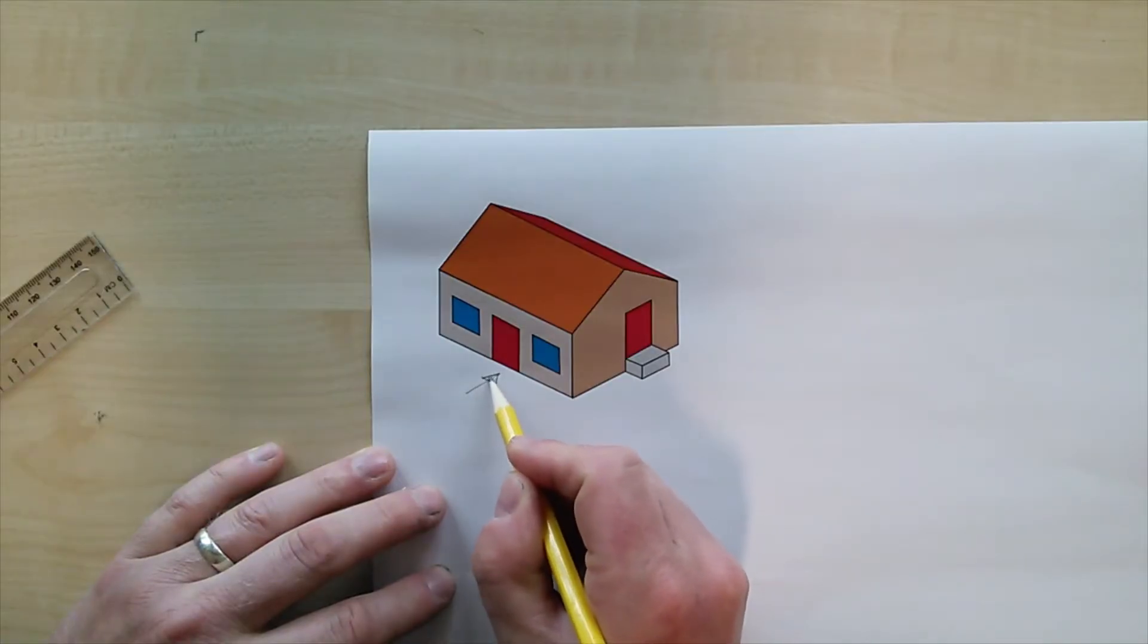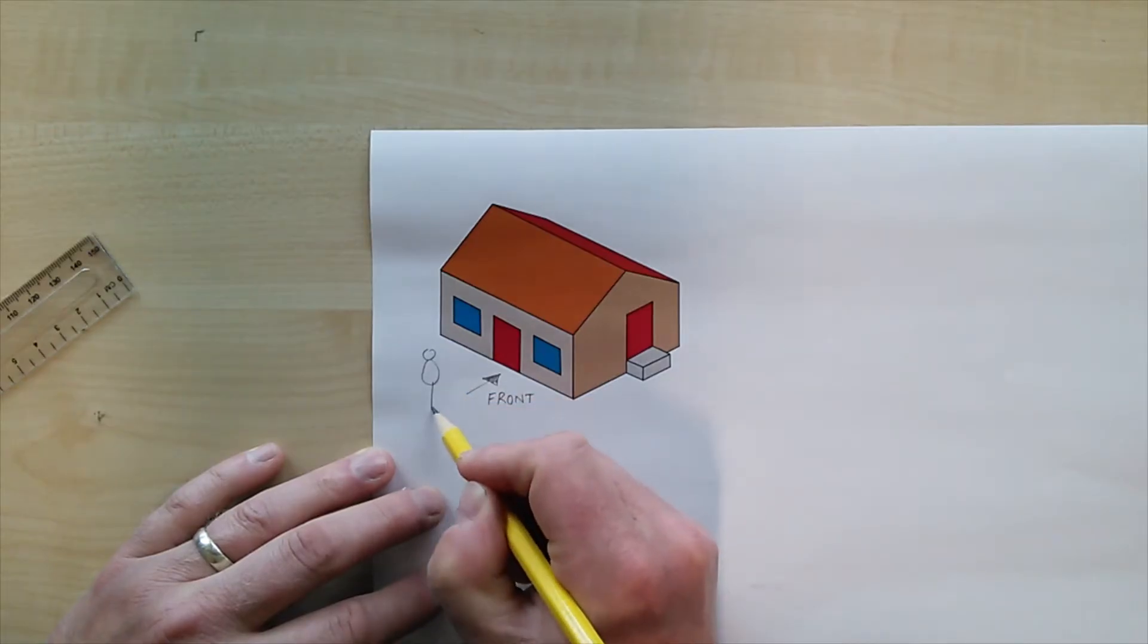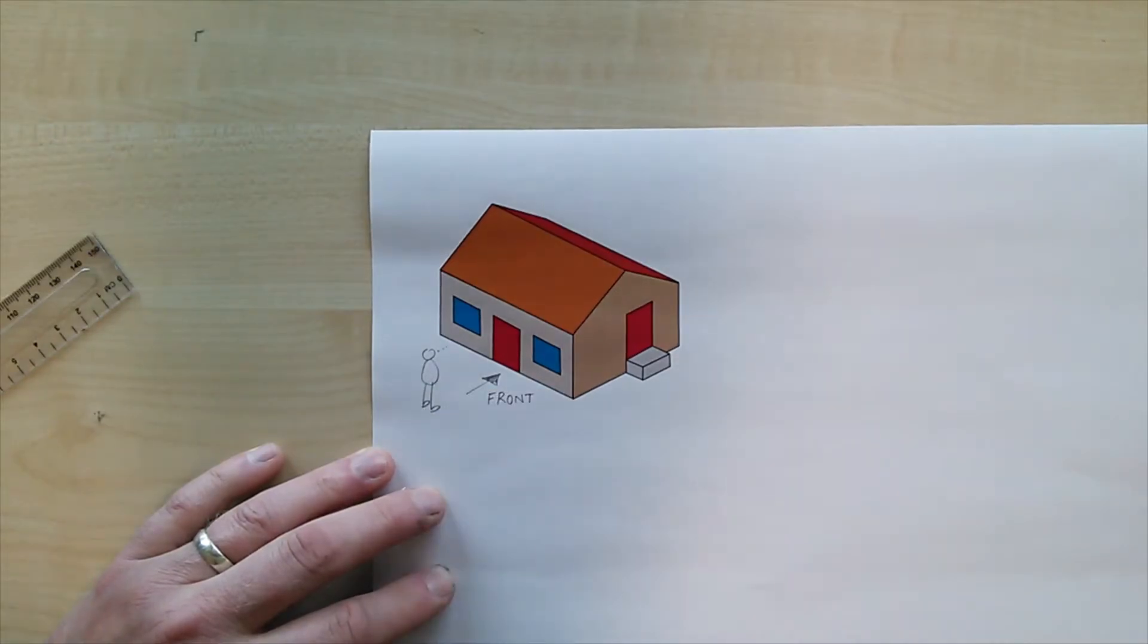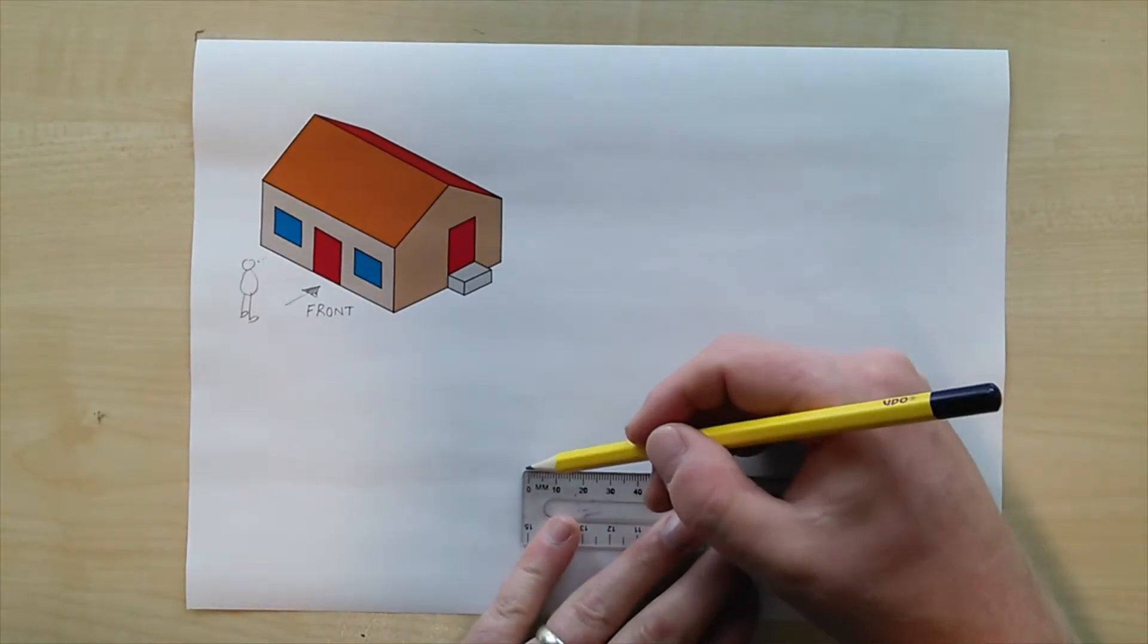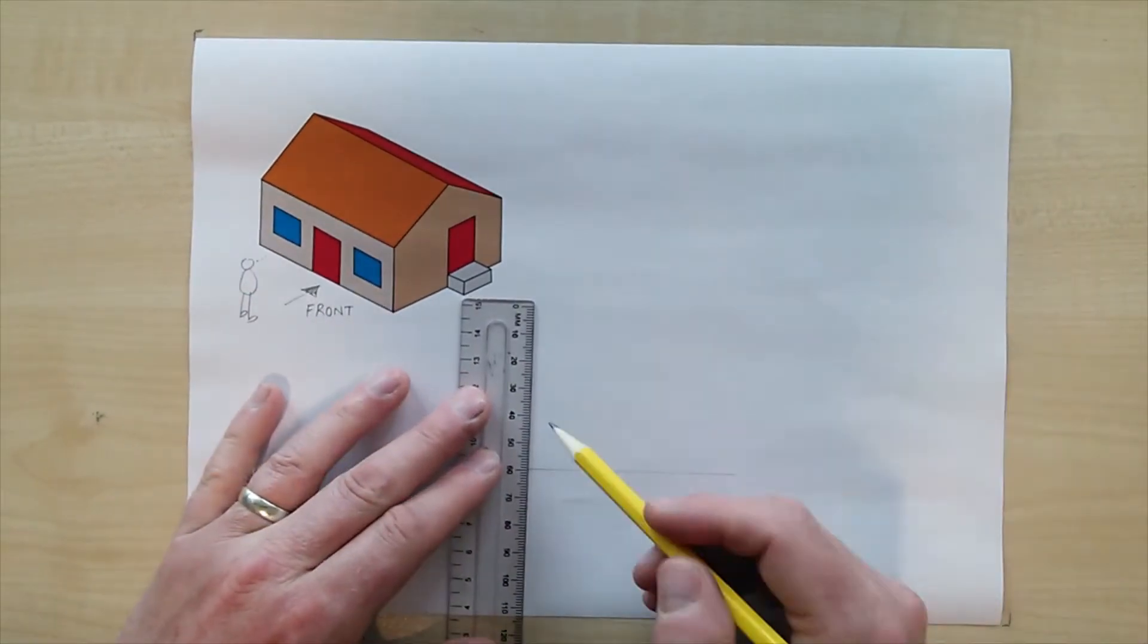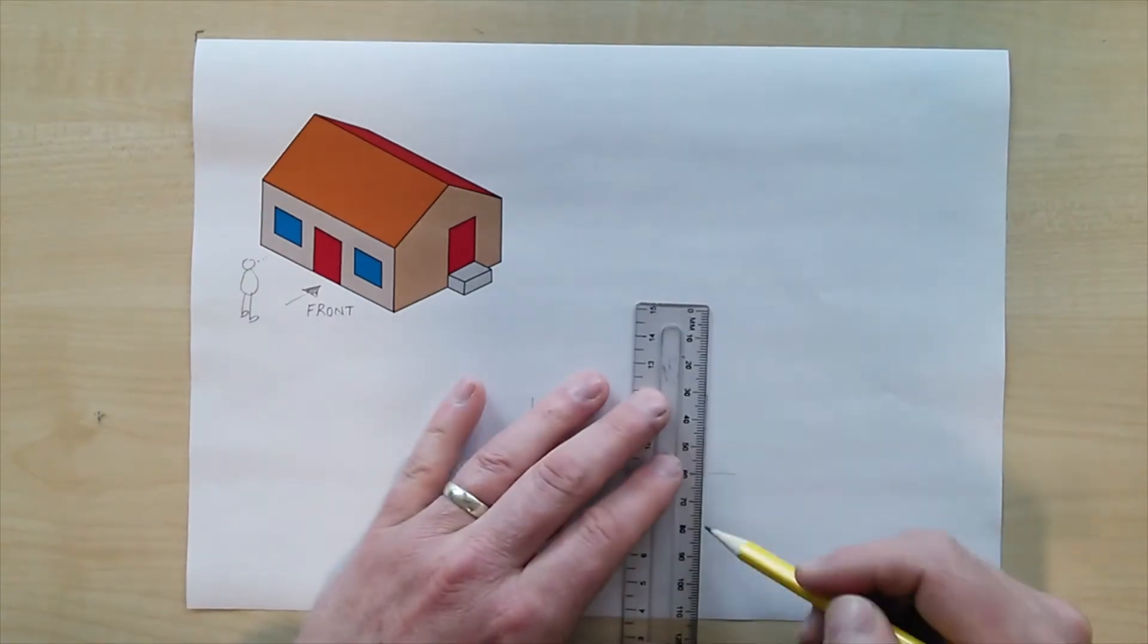The front view is the most important so in this image I've decided that that is the front view and it helps me to think or imagine a little person standing in front of the house and ask myself what would they be able to see.